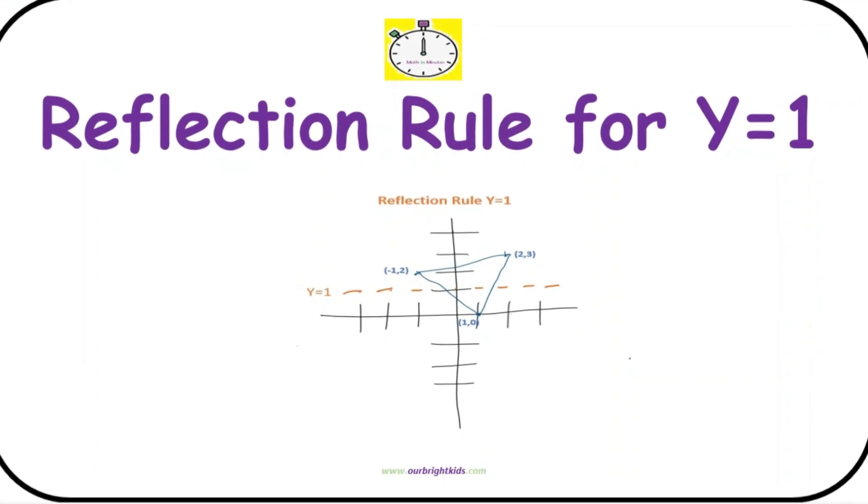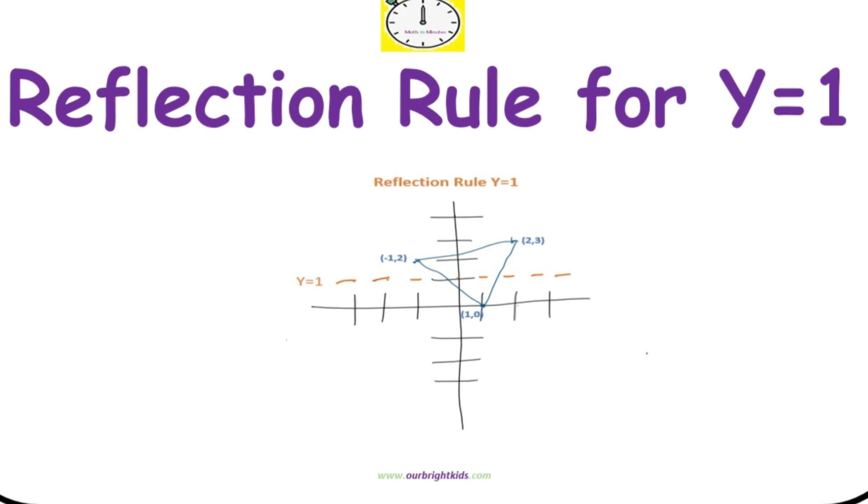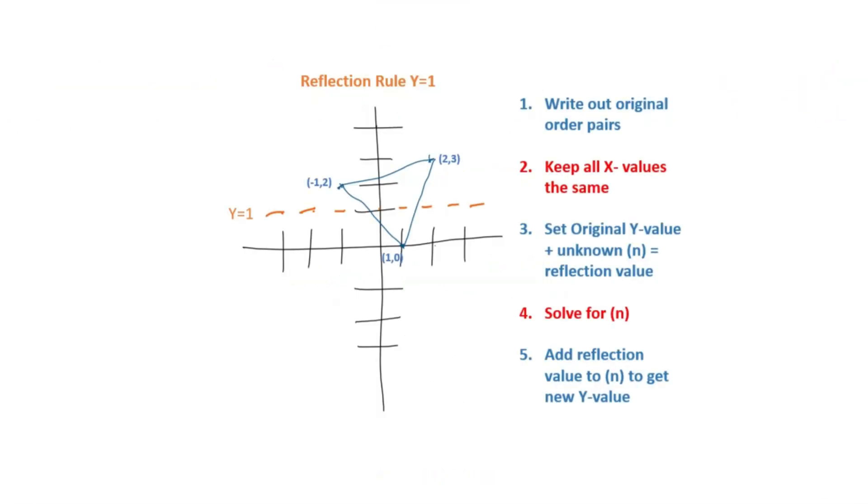In this Math in Minute video, we're going to look at the reflection rule when y equals 1. Looking at our graph, we have a triangle with its ordered pairs and our dotted orange line showing where y equals 1.